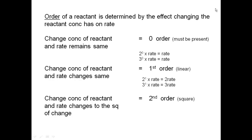If you change the concentration and the rate changes to the square, then it's second order. For example, if you double the concentration and the rate quadruples: 2² = 4. If you triple the concentration and get a ninefold increase in rate: 3² = 9. Following this logic, if it's third order and you double the concentration: 2³ = 8 times the rate.